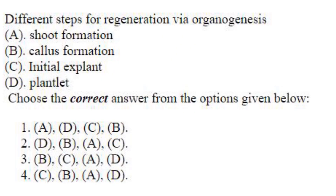Different steps for regeneration via organogenesis — what is the correct sequence? Initial explant: C. C is there only in option 4. Then comes callus formation, then shoot formation — shoot development from the callus. Then plantlet, D. So the sequence is C, B, A, D. Answer is option 4.